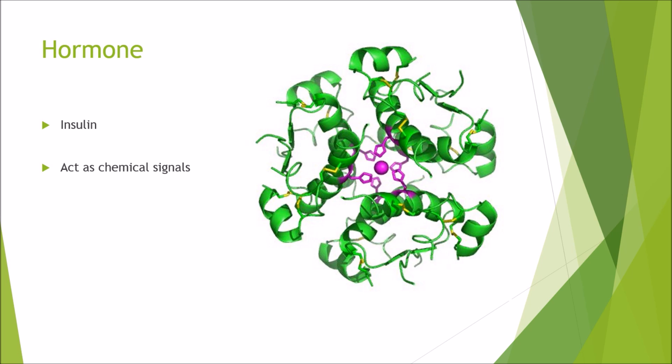Then the next one is hormone. This here is six residues of insulin. Insulin can act as a chemical signal. Hormones can have a wide variety of functions.